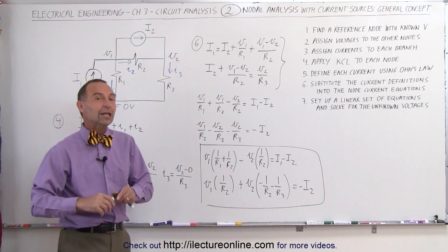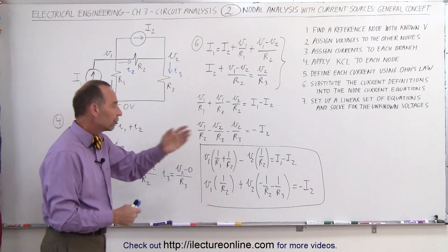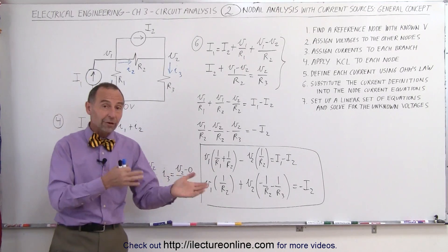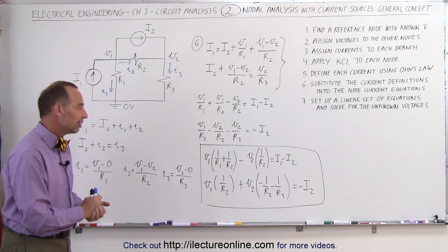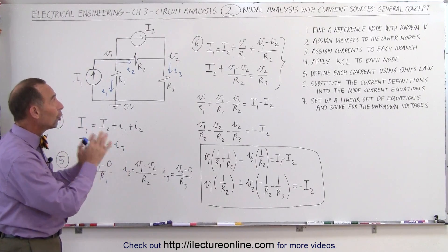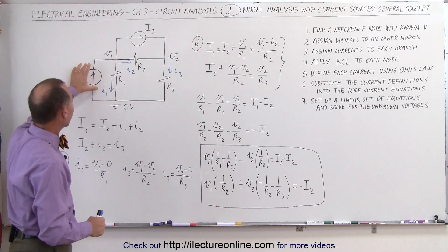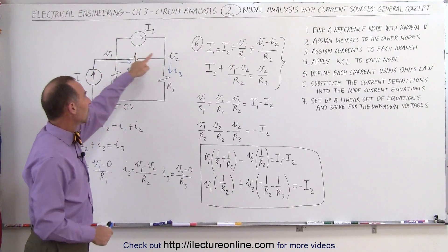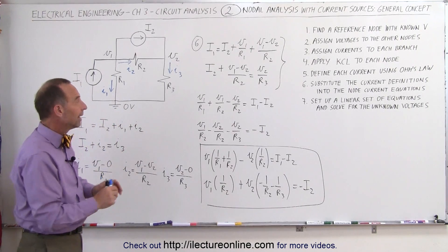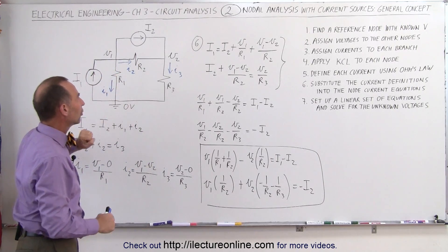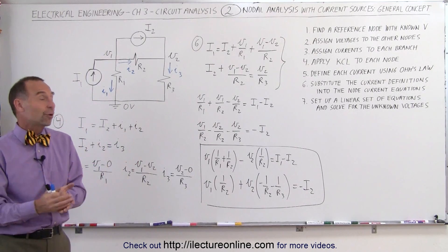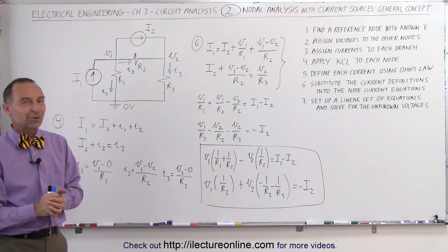Now we have a linear set of equations that we can solve in a number of ways — Cramer's rule, algebra, matrices, or other methods. Throughout the videos to come, we'll show you several methods that are very handy for these kinds of equations. In summary, the nodal analysis method applies to circuits with current sources. We assign unknown voltages to nodes, reference everything to a known zero-volt ground, assign branch currents, set up equations using the seven steps, and solve for node voltages and branch currents in a straightforward way.